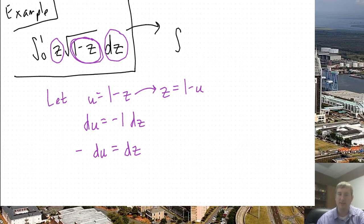Integrate. The z gets replaced with 1 minus u. Square root. The 1 minus z gets replaced with a u. And then the dz gets replaced with a negative du.